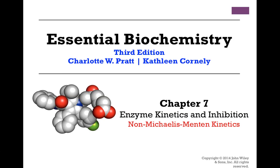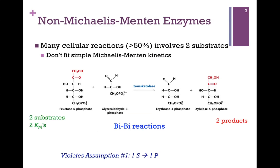We're continuing our studies in Chapter 7, Enzyme Kinetics and Inhibition, and in this lesson we want to look at non-Michaelis-Menten kinetics. There are examples of enzymes that do not obey Michaelis-Menten kinetics. Remember, in order to derive that expression for the Michaelis-Menten equation, we made some simplifying assumptions. So if a reaction violates one of those assumptions, then those simple rules no longer apply, and it might not be appropriate to use the Michaelis-Menten equation. It becomes important to know when it is appropriate and when it is inappropriate to use certain equations.